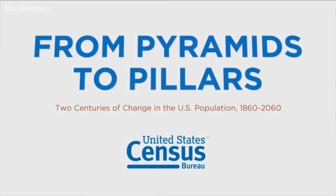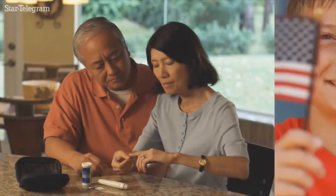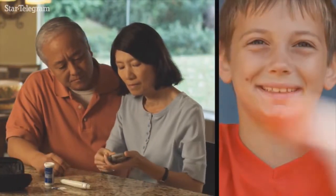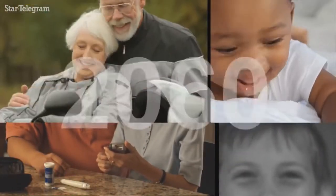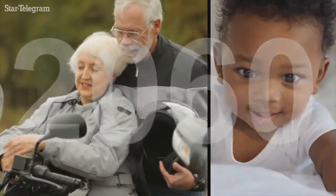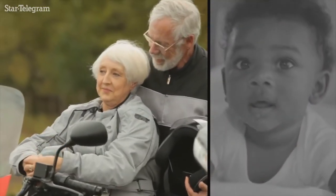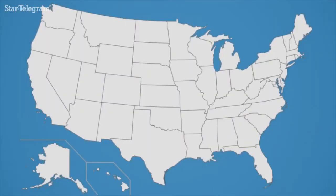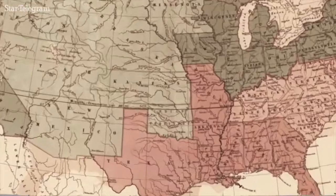The United States is an aging country. Today, there are more middle-aged people in the U.S. than children, and by 2060, there will be more elderly than young children. But the U.S. population didn't always look like this.